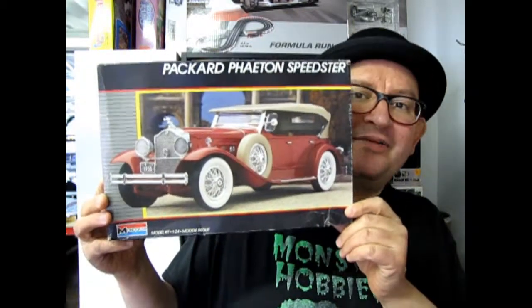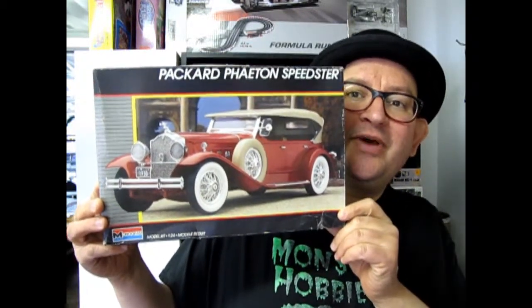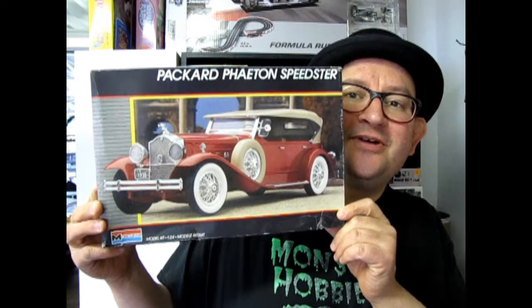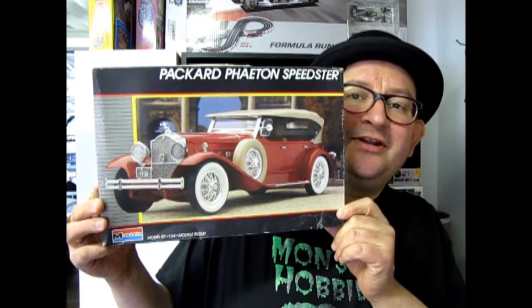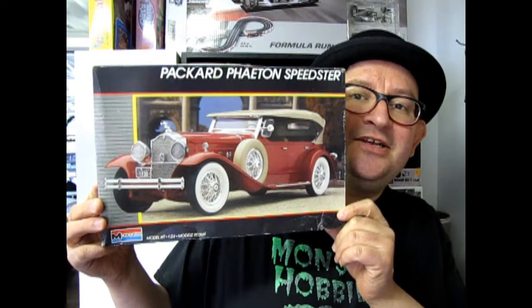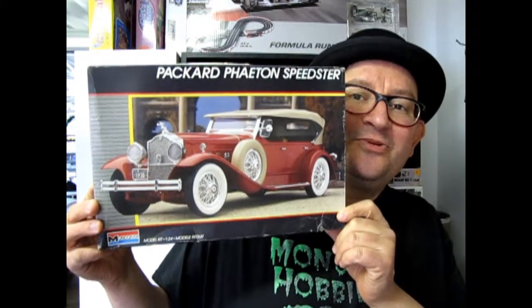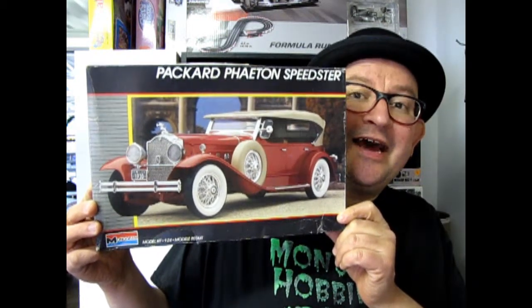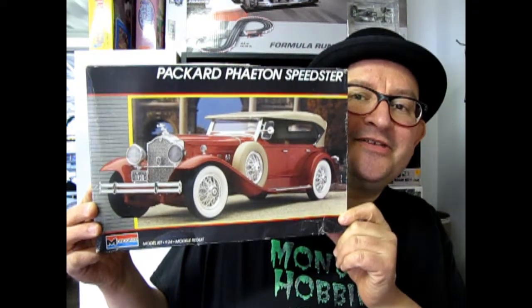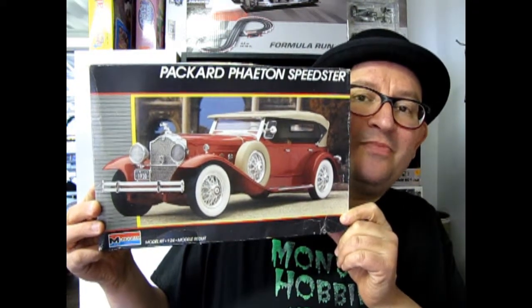Tonight we have a special What's in the Box for you. We are going to be looking at Monogram's 1930 Packard Phaeton Speedster. This was one of those great luxurious cars of 1930 that sold a lot back in the day. And now let's go down to our bench and see how Monogram made this model.